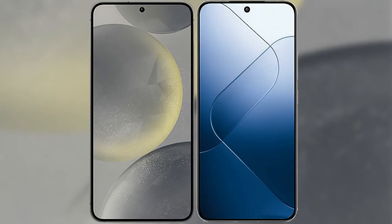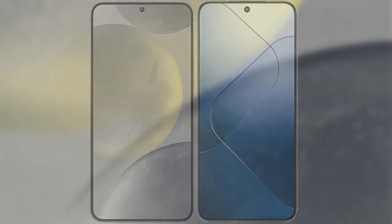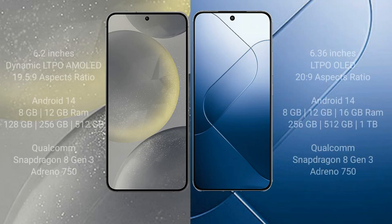I will compare the new Samsung Galaxy S24 with Xiaomi 14. Samsung Galaxy S24 comes with a 6.2-inch Dynamic LTPO AMOLED display and aspect ratio 19.5:9. Xiaomi 14 comes with a 6.36-inch LTPO OLED display and aspect ratio 20:9.